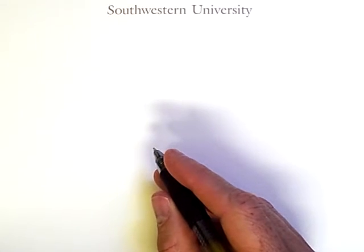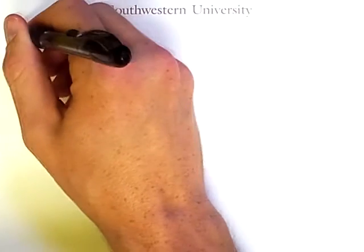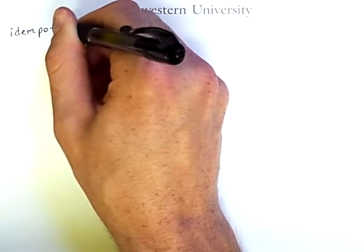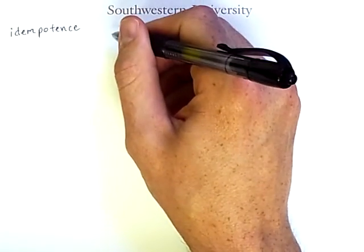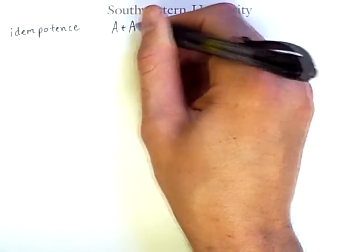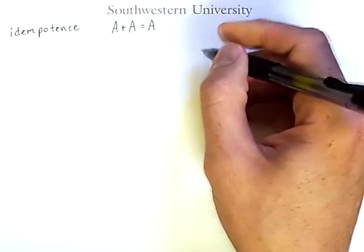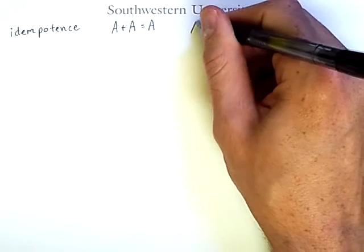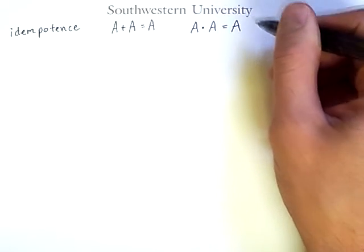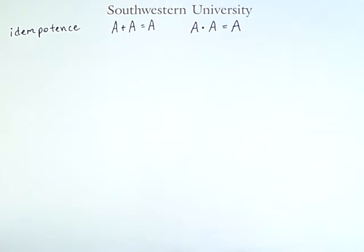Now, many of these laws are common sense, but some of them have strange names. For example, the idempotence laws indicate that A or A is the same thing as A. Likewise, A and A is also the same as A. This law holds not just for any variable A, but for any arbitrary expression.